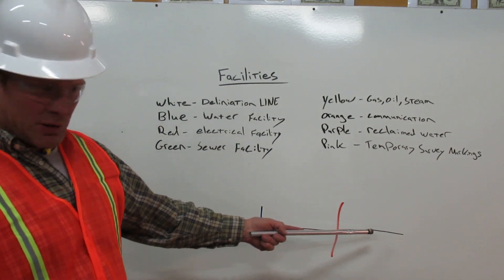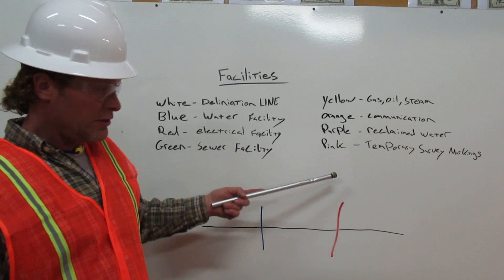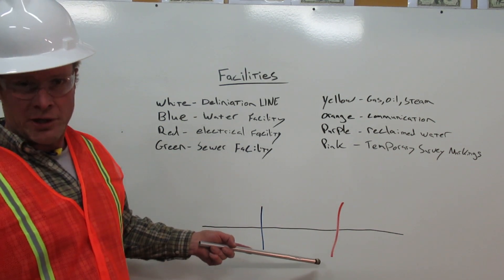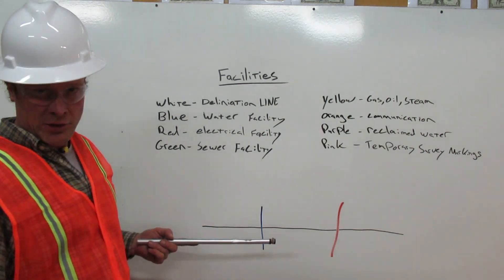This is our delineation line. It is black instead of white because it is on a whiteboard. This is a red line crossing our delineation line. This is a blue line crossing our delineation line.